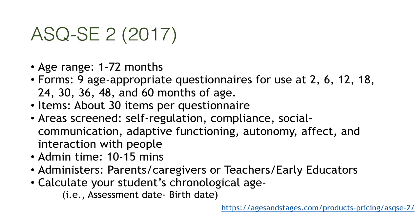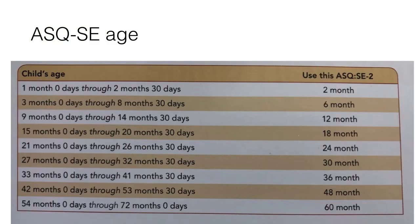To use the form, you first have to calculate your student's chronological age. You do this by subtracting the birthday from the assessment date — the day you assess the student. Once you calculate the student's age, you can pick the right form. There are 9 different forms, so once you calculate the student's age, you select the appropriate one.